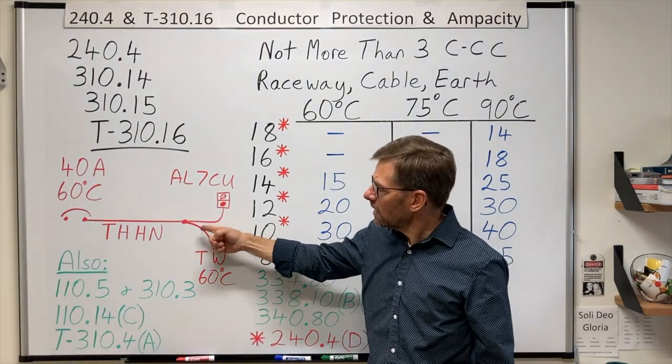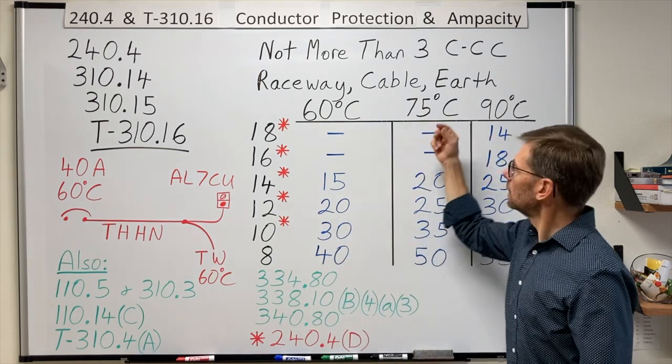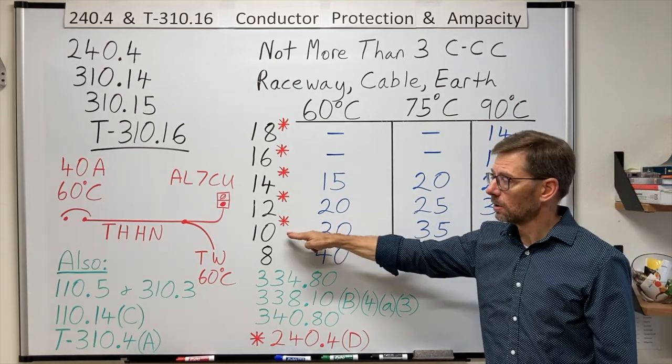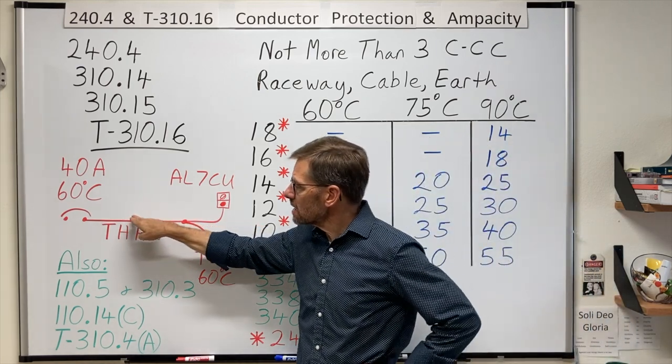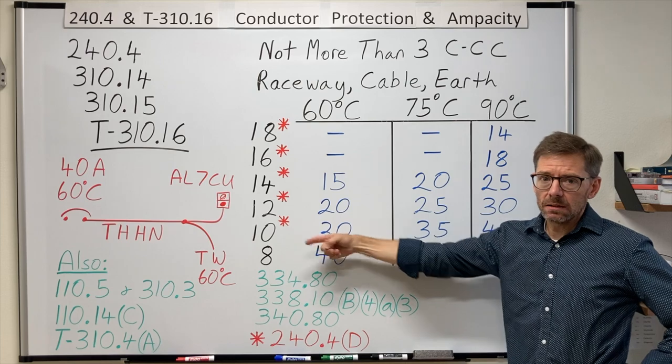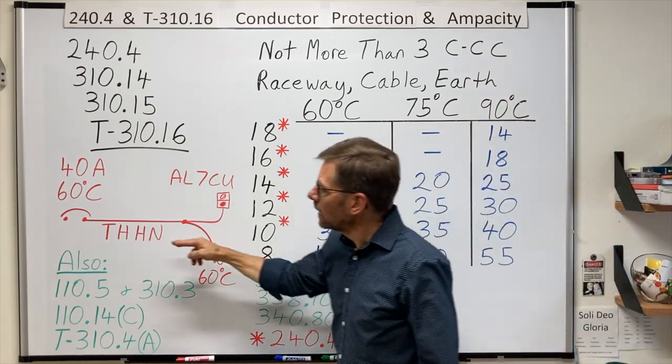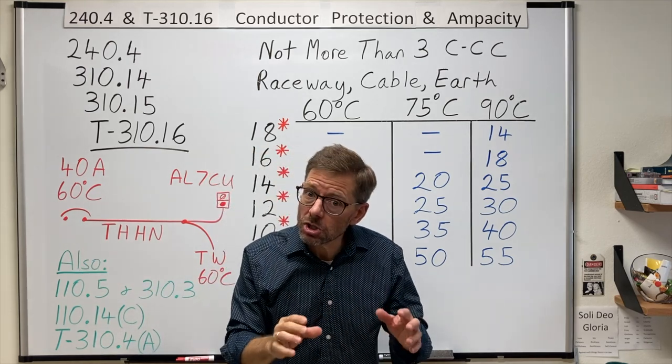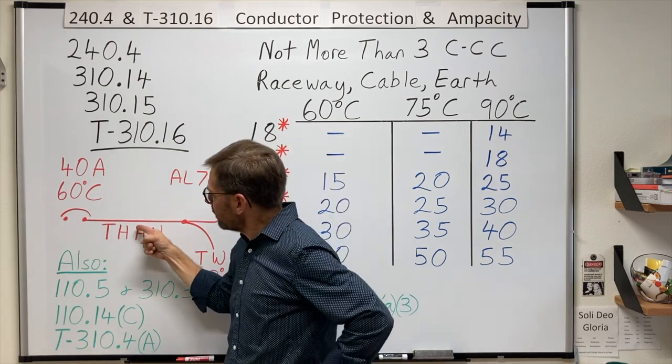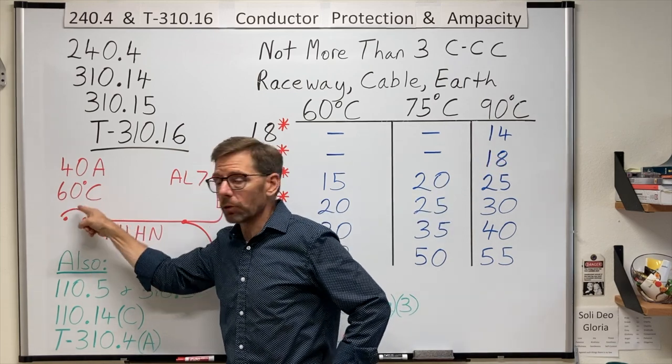You might think in this scenario, with a 40 amp breaker and THHN wire, that I can look at the table, find THHN in the 90 degree column, go down and look for 40 amps, and say a number 10 will be adequate. But let's consider what happens if I put a number 10 in there. If I run 40 amps on a number 10, is that conductor likely to get up close to 90 degrees Celsius? Sure.